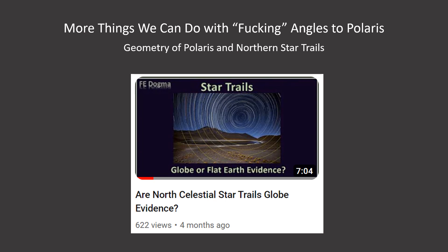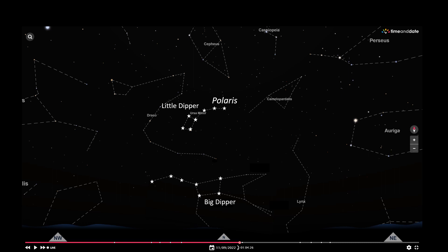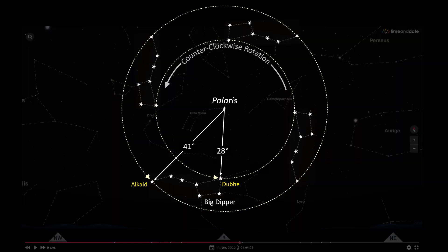And here's something else we can do with fucking angles to Polaris. About four months ago, I uploaded this video, North Celestial Star Trails Globe Evidence. Here are two well-known constellations in the northern sky, Ursa Minor and Major. Now, in America, they're commonly referred to as the Big Dipper and the Little Dipper, which has Polaris at the end of its handle. And I'm going to take a look at these two stars, Dubhe, which is 28 degrees away from Polaris, and Alcaid, which is 41 degrees away. Since the Big Dipper makes a counterclockwise rotation around Polaris every day, that means that the paths of these two stars are circles with Polaris at its center.